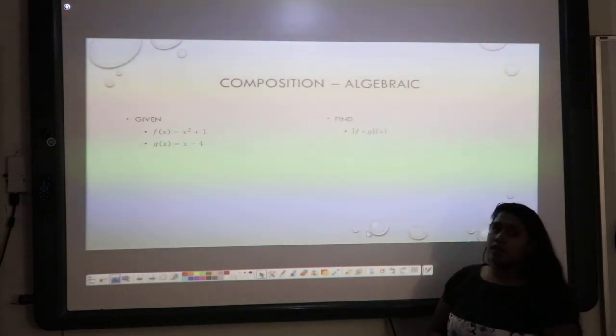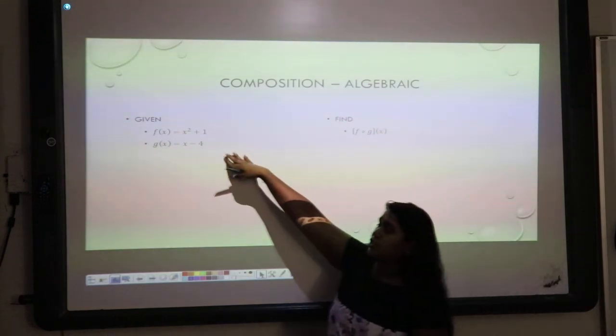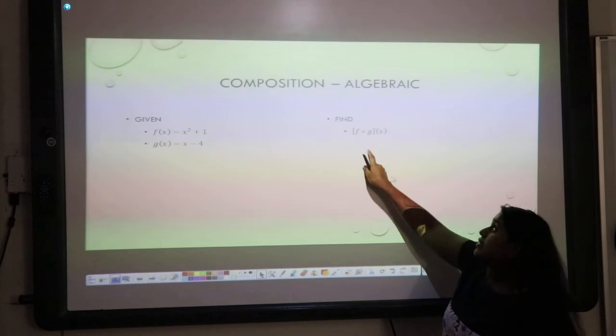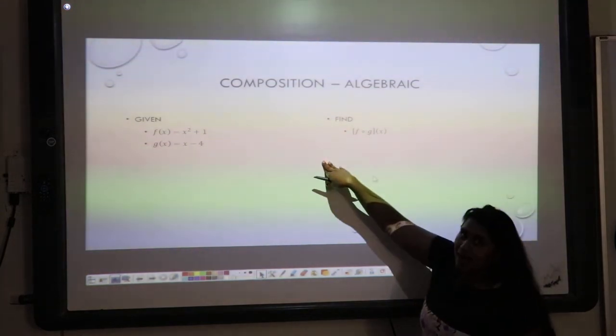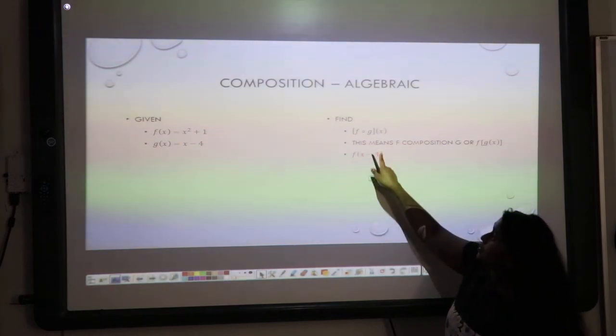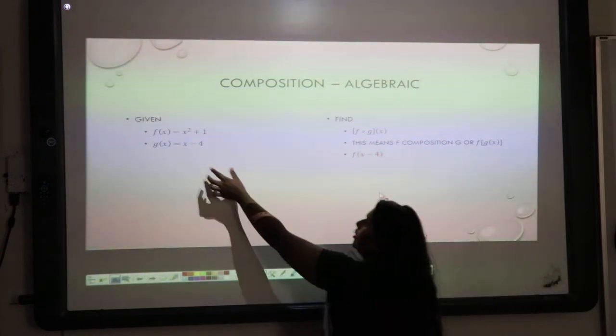Okay, so here's an algebraic solve. Here's our example. We have these two functions, f and g. So, we're going to do f composed g. That means I'm going to evaluate g inside of f. So, that means here's my g in red, x minus 4, within my f, inside of my f.